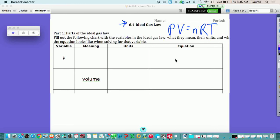In part one, you're just filling out the variables. P means pressure. What units is it for pressure? Always going to be atmospheres. If you see it in things like millimeters of mercury, TOR, or KPA, you're going to have to convert into atmospheres.